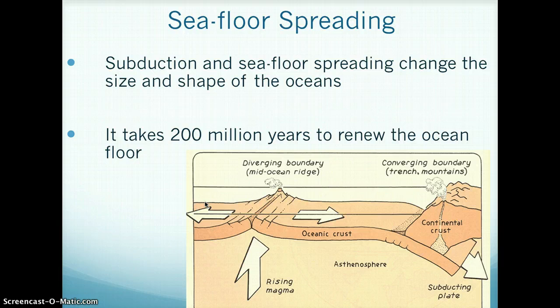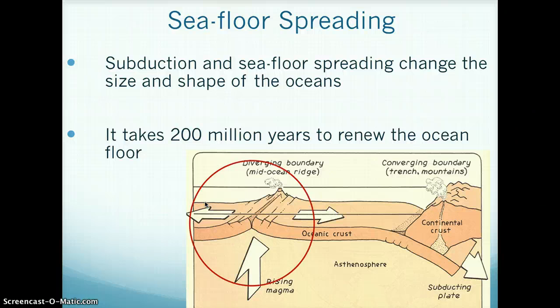Subduction and seafloor spreading change the size and shape of the oceans and move the continents. These two processes cause continental drift. The process is very slow — it takes about 200 million years to renew the ocean floor. The red circle on the left of this image shows seafloor spreading, and the blue circle on the right shows subduction.